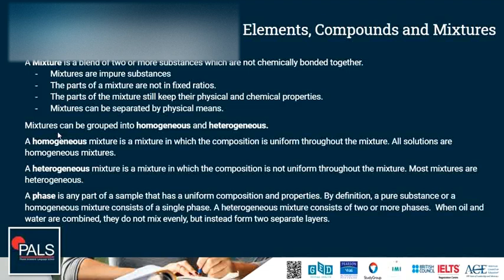A phase of a mixture is any part of a sample that has a uniform composition and the same properties. By definition, a pure substance or a homogeneous mixture consists of a single phase. A heterogeneous mixture consists of two or more phases. For example, when oil and water are combined, it's a heterogeneous mixture. They do not mix evenly, but instead they form two layers, and these two layers are the separate phases.